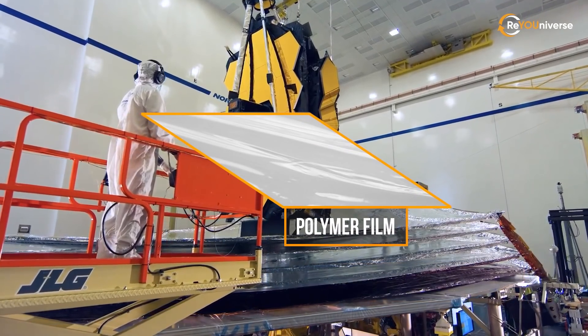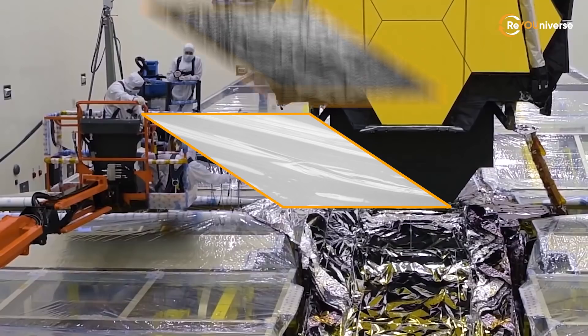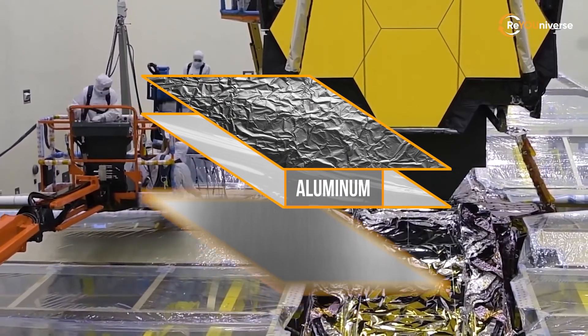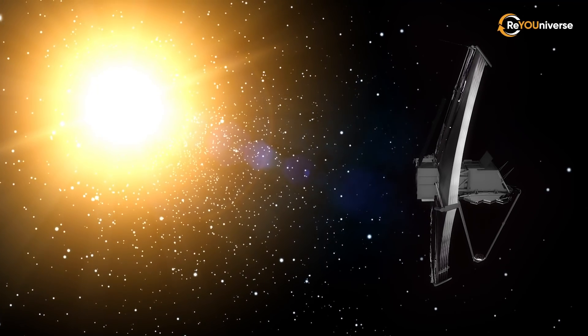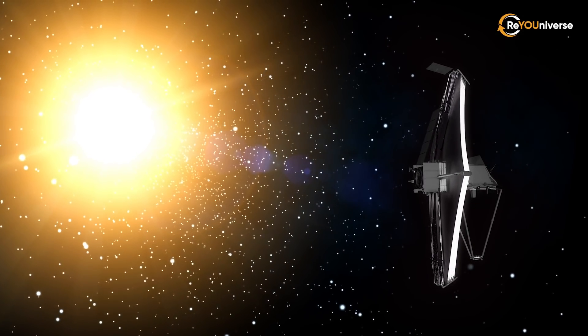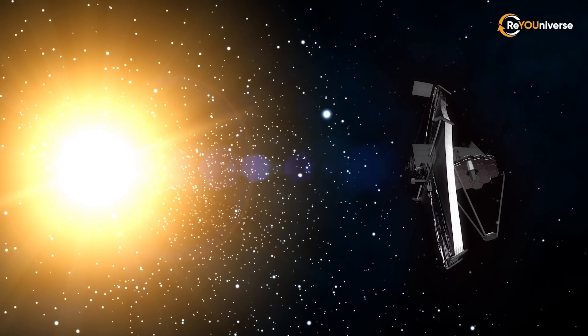A special polymer film was used to manufacture the shield, covered with a thin layer of aluminum on one side and metallic silicon on the other. Vacuum will fill the space between the layers of the heat shield. These interlayers make it difficult to transfer heat to the telescope's core.